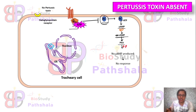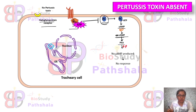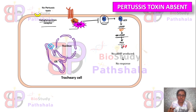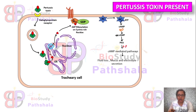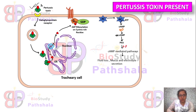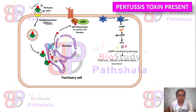No further responses can be observed in the tracheal cell. The glycoprotein receptor acts as the receptor for Pertussis toxin. This pathway is observed when Pertussis toxin is absent. Now, when Pertussis toxin is present — the red one represents the A subunit and the green ones represent the B subunits — it attaches to the glycoprotein receptor.